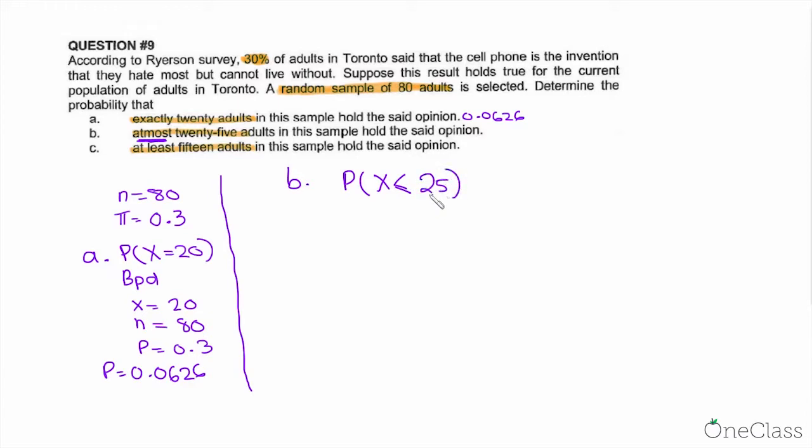You simply plug it into your BCD. The X will be 25, since, as we said before, the formula in BCD is probability of X less than or equal to a number. So you plug in 25, and the other data remain the same: n is 80, P is 0.3. The answer is 0.6479.